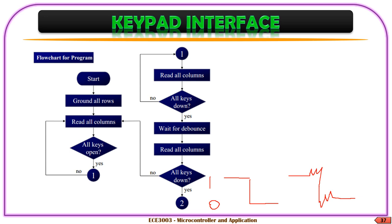What we have to check is whether there is any key-pressing event after this particular brief delay. We take this delay as 20 milliseconds. We check for this particular duration of 20 milliseconds whether the key is still being pressed or not. If the key is still being pressed even after this 20 milliseconds, we consider that a key-pressing event. In case the key is released before 20 milliseconds, we understand that it was an unintentionally pressed key and we do not consider it as a key-pressing event, so we go back to read the columns.